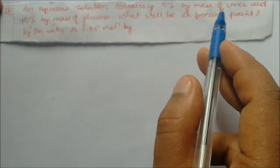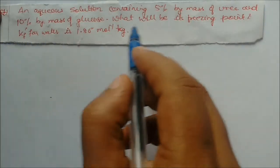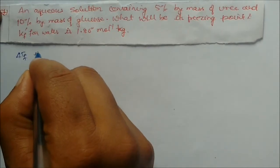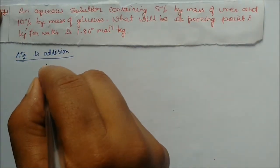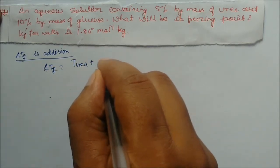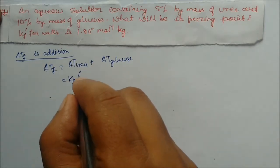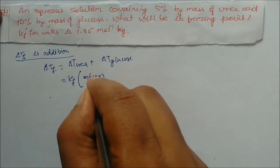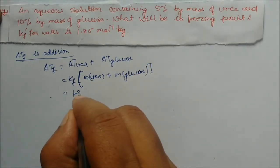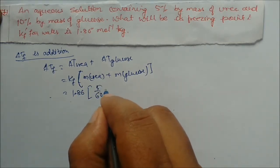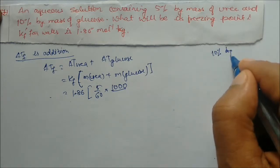Next problem: an aqueous solution contains 5 percent by mass of urea and 10 percent by mass of glucose. What will be the freezing point? Kf is given as 1.86. Since both are non-volatile solutes, delta Tf is additive: delta Tf = delta T(urea) + delta T(glucose) = Kf × (m_urea + m_glucose). For urea: 5 grams in 85 grams solvent; molality = (5/60) × (1000/85).